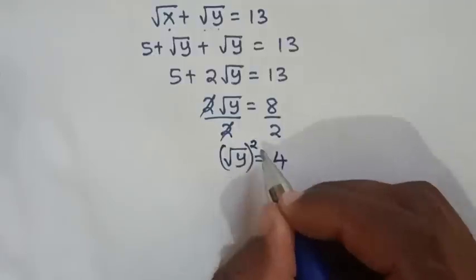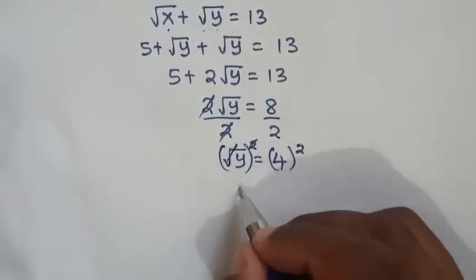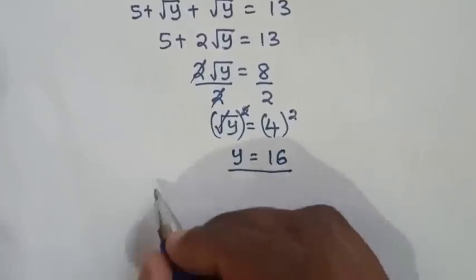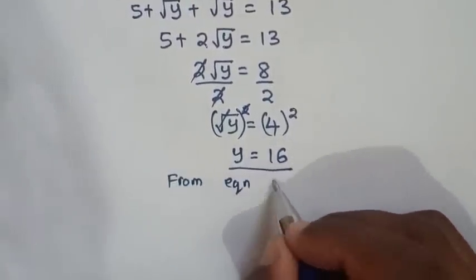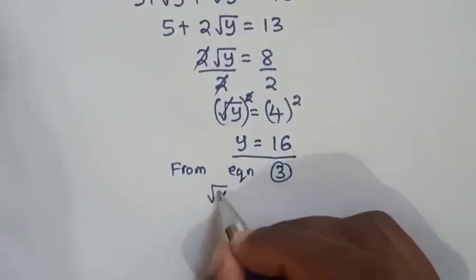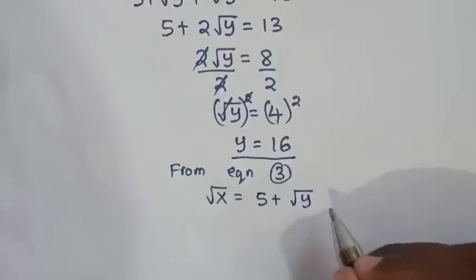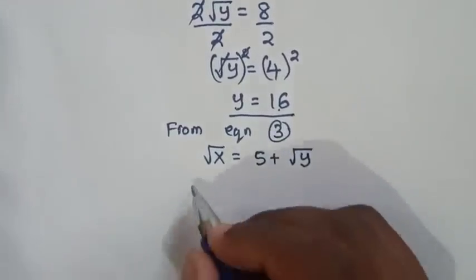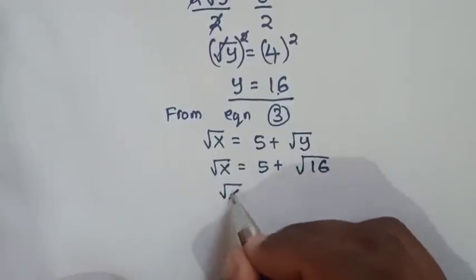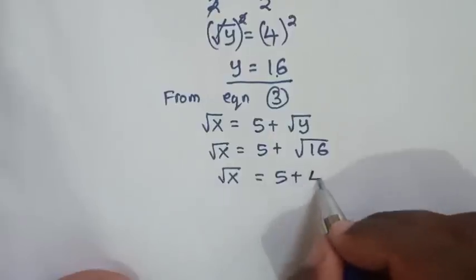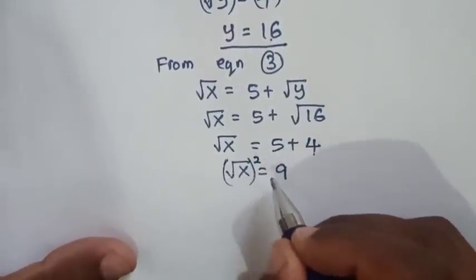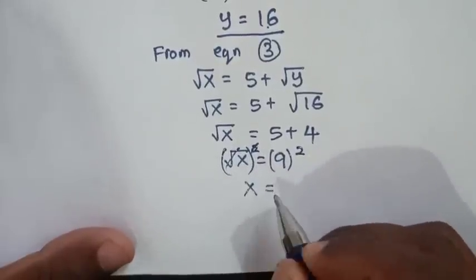We take 5 to the right side: 2√y equals 13 minus 5, which is 8. Dividing both sides by 2 gives √y equals 4. Squaring both sides, y equals 4 squared, which is 16. Then from equation 3, √x equals 5 plus √16 equals 5 plus 4 equals 9. Squaring both sides gives x equals 81.